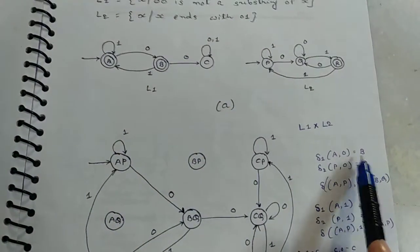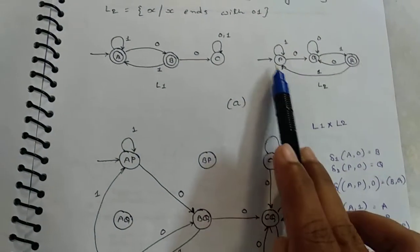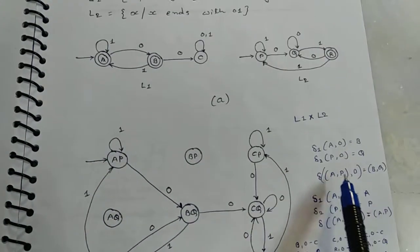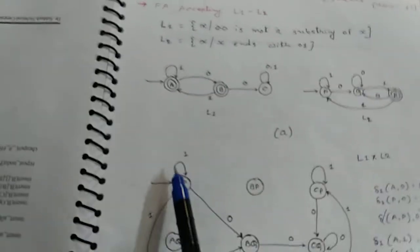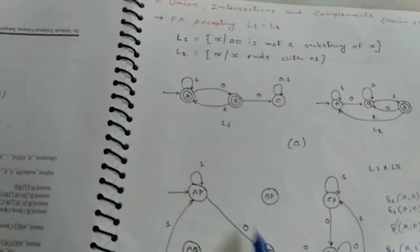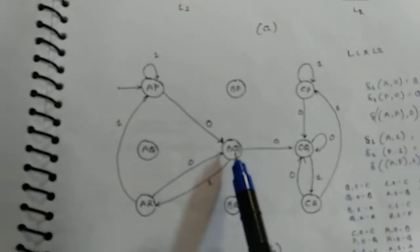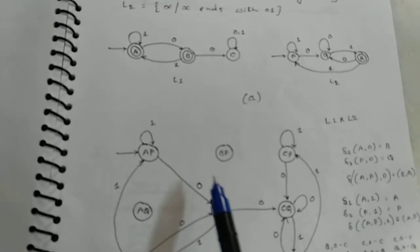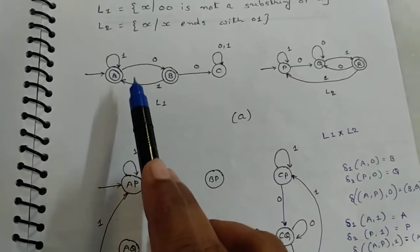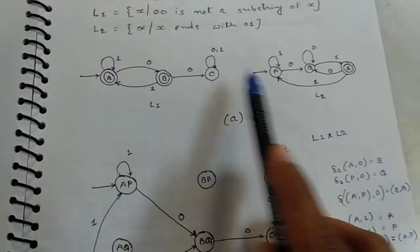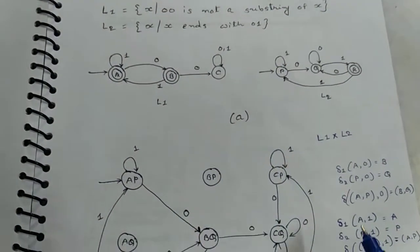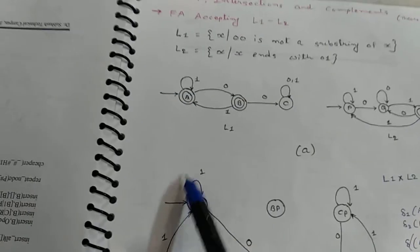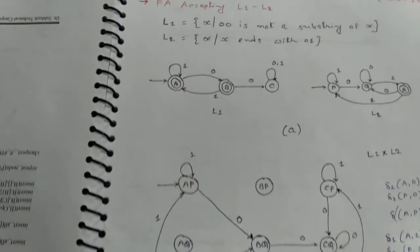And P to 0, from P to 0, state Q. So AP to 0, state BQ. Then after AP to 1, first A to 1 reach at A, P to 1 reach at P. So AP to 1, so here we create self loop.